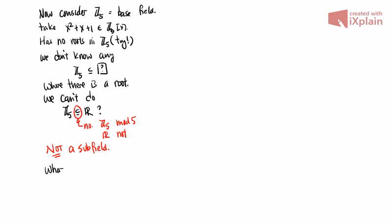So what can we do in this case? This is where the big theorem comes up. The theorem basically says: you don't need to know about a bigger field preemptively. The idea of the theorem is you can build a bigger field automatically just knowing about the base field, and in that bigger field you will have a root — no preemptive knowledge required.